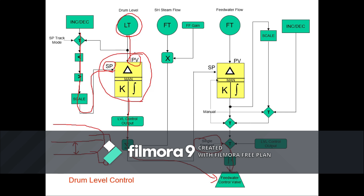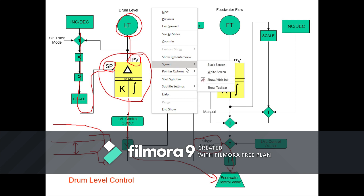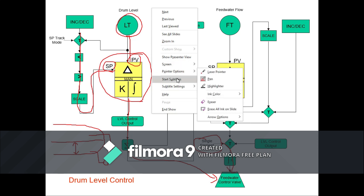Super simple — set point, level, valve open/close. Remember: in a drum level control strategy, as PV goes up, CV goes down; as PV goes down, CV needs to go up. If you do it the opposite, you're going to run out of water or overfill the drum. Don't forget that.